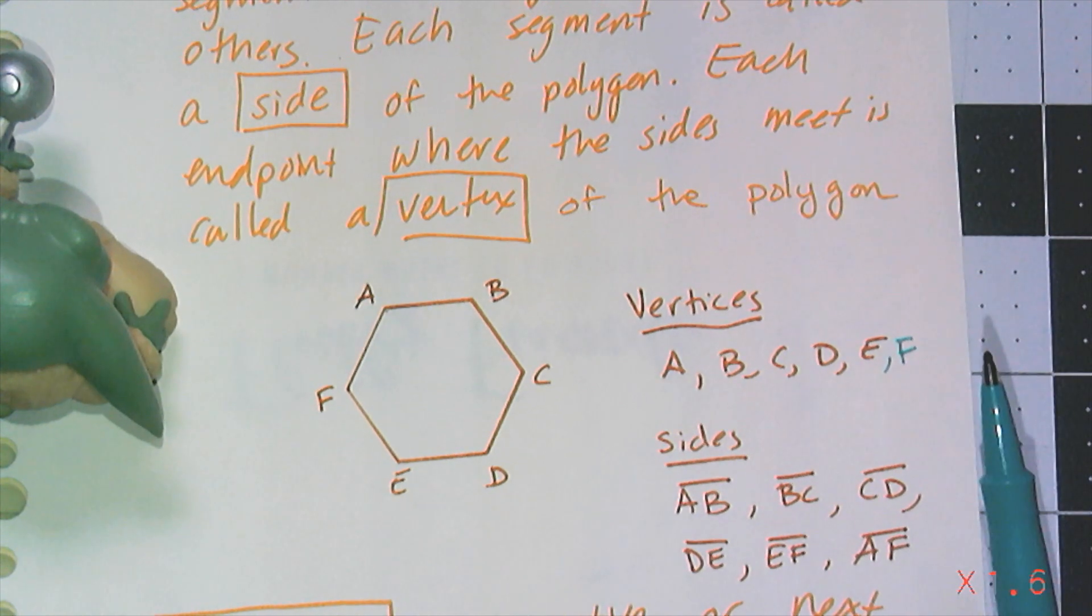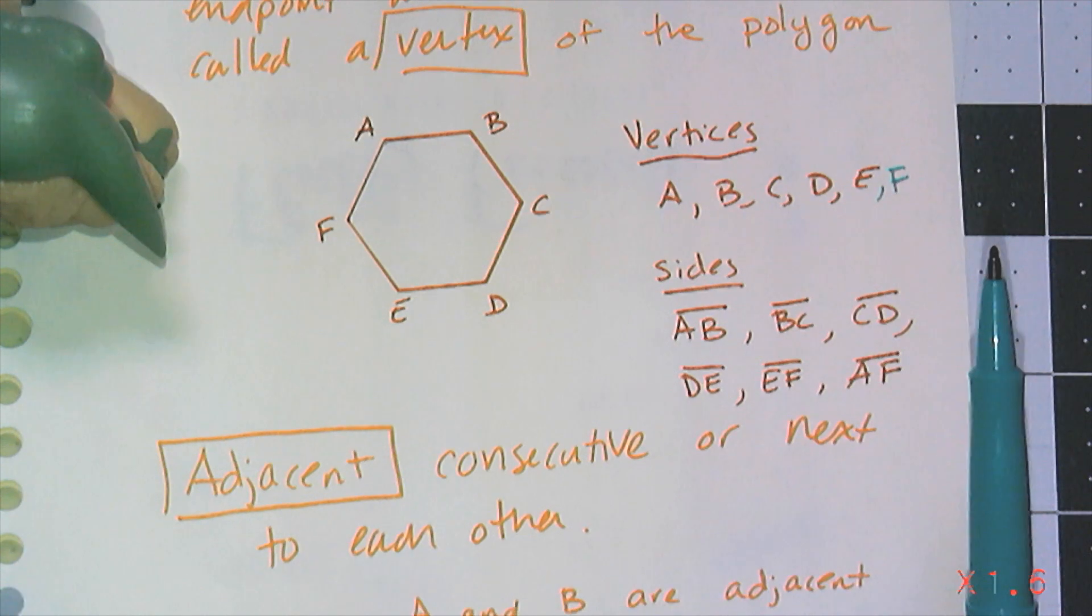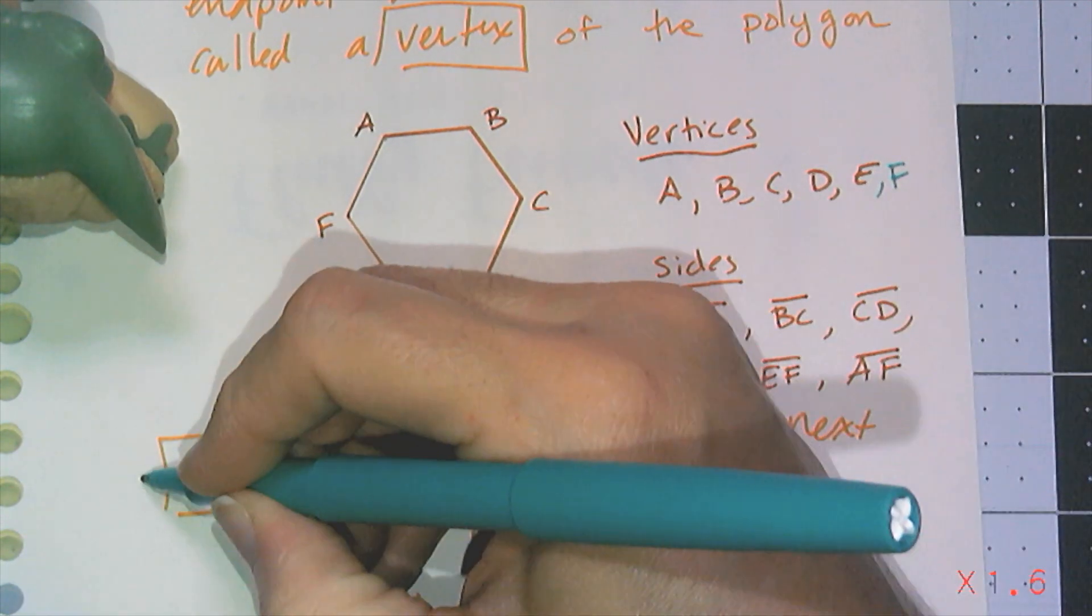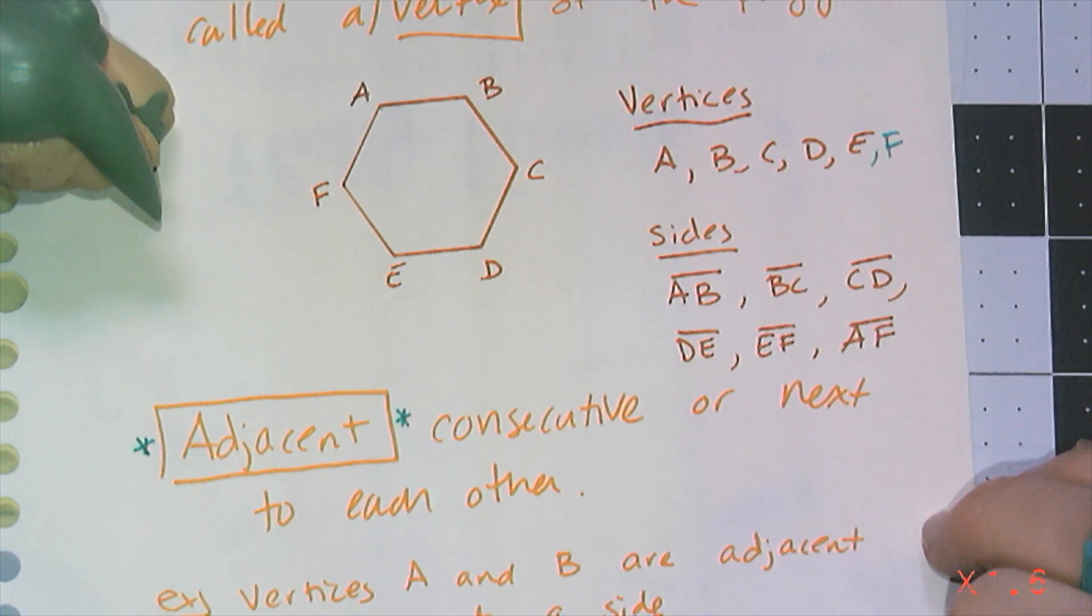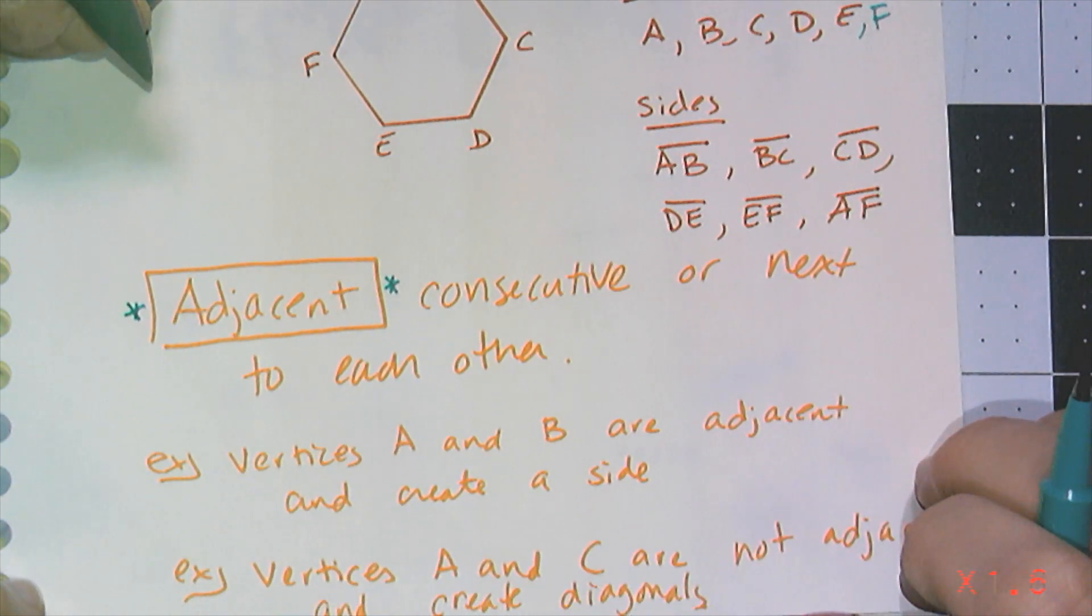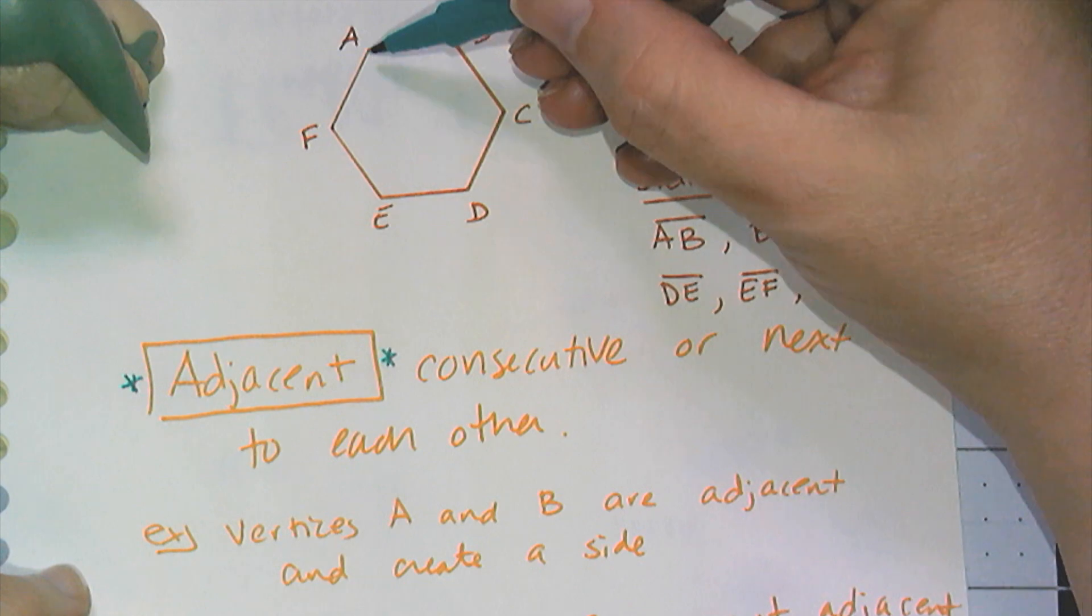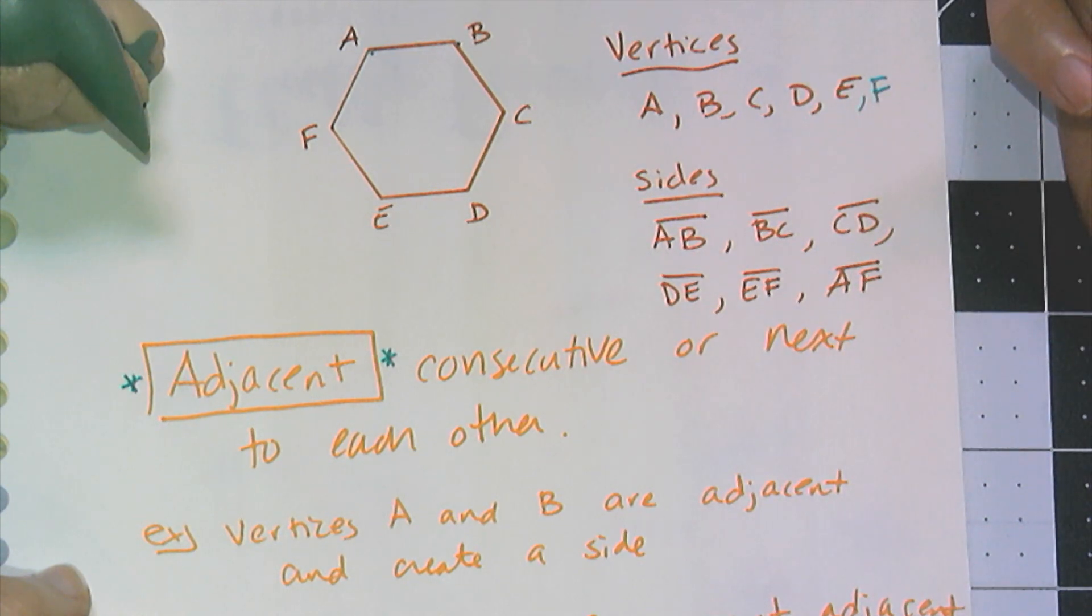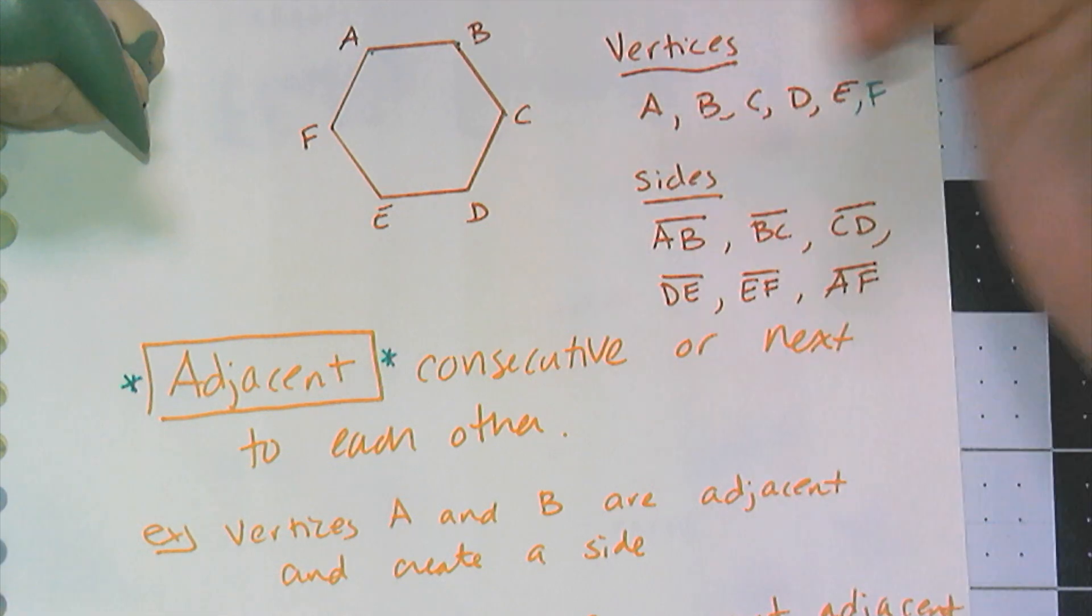Now I'm going to attach additional vocabulary: the word adjacent. This is a very important word. It means consecutive or next to each other. So vertices that are consecutive are right next to each other, like A and B are adjacent vertices, B and C are adjacent vertices. These adjacent vertices form the sides.